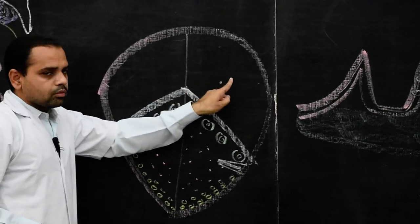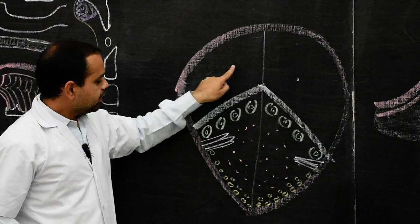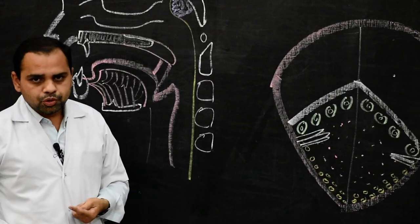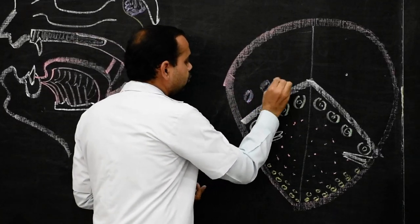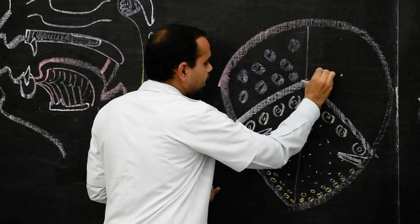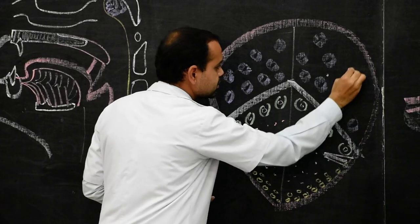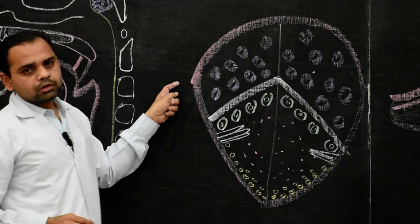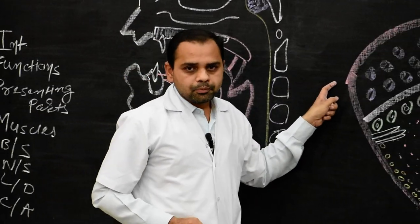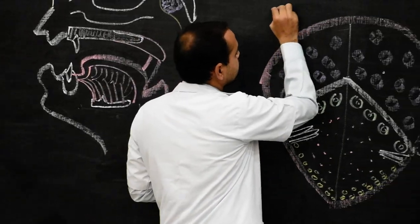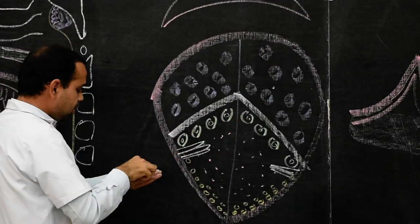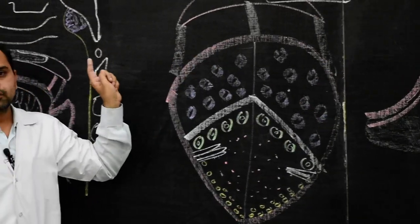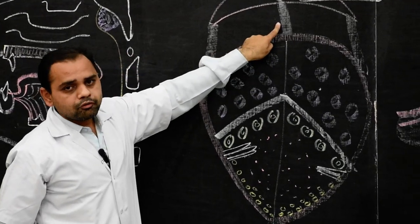The pharyngeal part of the dorsum of the tongue is devoid of papillae. The mucous membrane has a nodular appearance, and below the mucosa there is a submucosa consisting of aggregations of lymphatic follicles along with serous and mucous glands. This aggregation of lymphatic follicles is known as the lingual tonsils. This posterior one-third portion is also known as the base of the tongue. The base of the tongue is connected to the epiglottis by means of a median and two lateral glossoepiglottic folds, and the space around the median fold is known as the epiglottic vallecula.